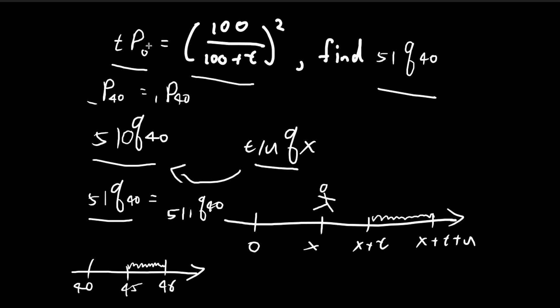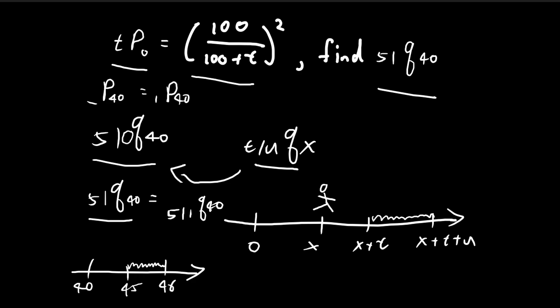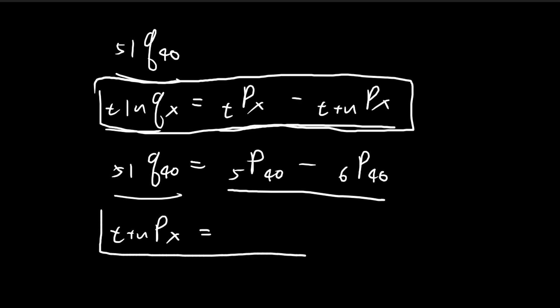But notice we're not given the formula for tp40. We're only given the formula for tp0. So there's a second formula we need to use. This is one formula we showed last time.